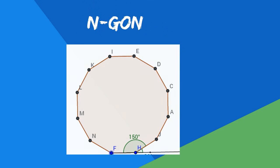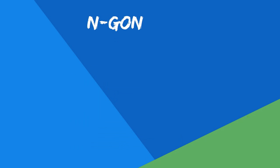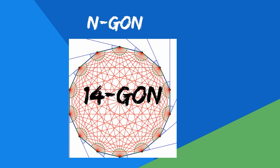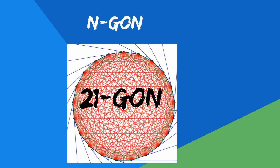After twelve the names get a little crazy, and it is acceptable to give the number of sides and then 'gon' as a description. For example, a polygon with fourteen sides would be a fourteen-gon. A polygon with twenty-one sides would be a twenty-one-gon.